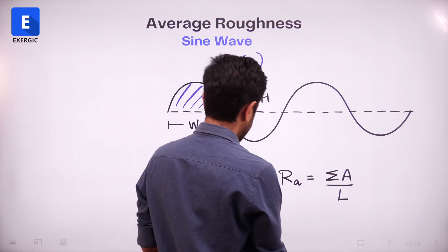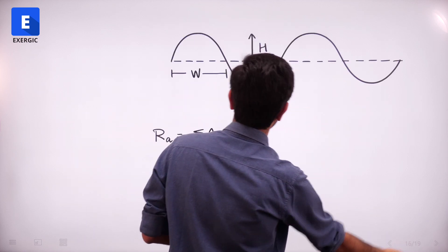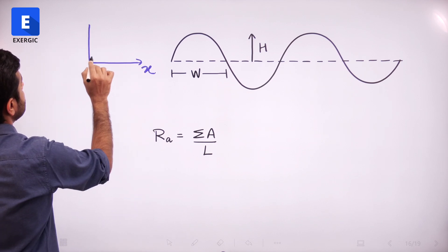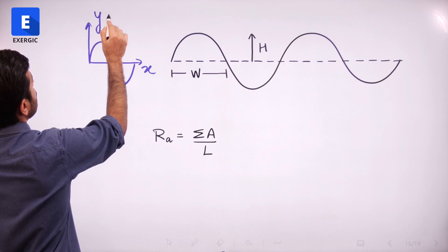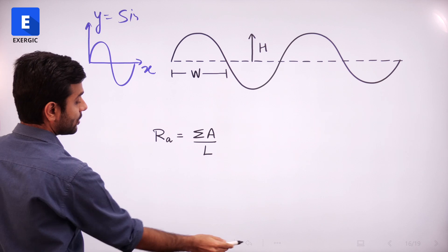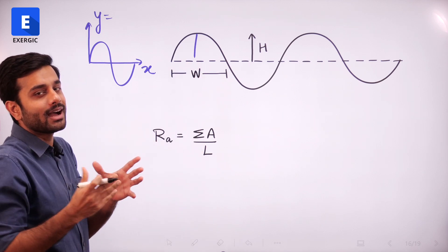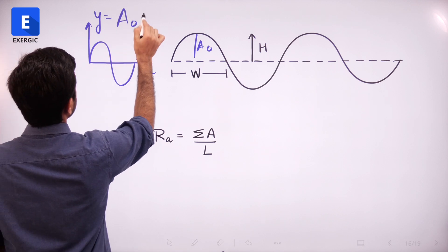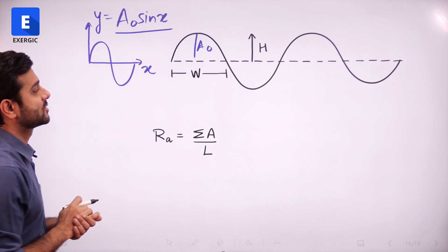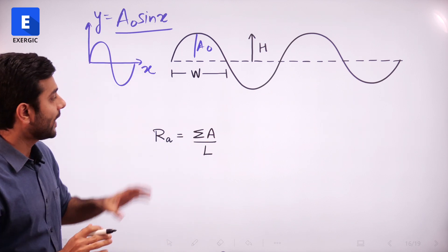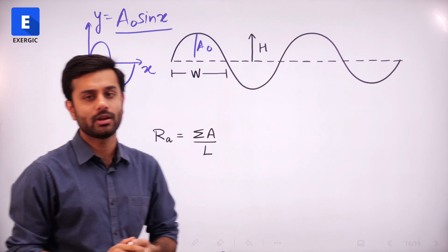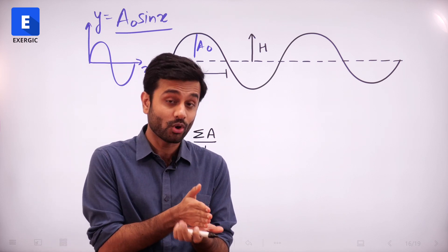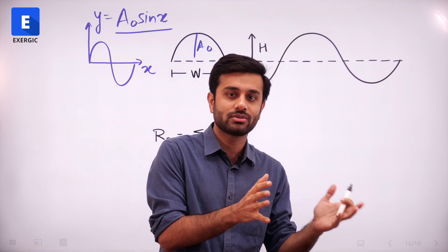Here, it is a sine wave. If we define this wave where x is the horizontal direction and y is the variation, then y is a function of x — specifically sine x, but with an amplitude possibly greater than 1: 2 sin x, 3 sin x, 5 sin x. So let us call the general expression y = a₀ sin x for this entire fluctuation. To find the area, since we cannot directly apply a formula, we integrate this continuous function.